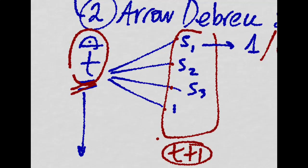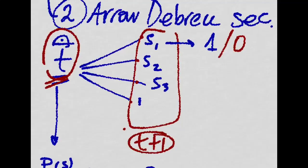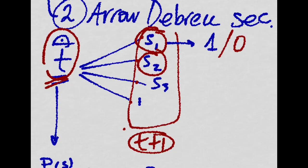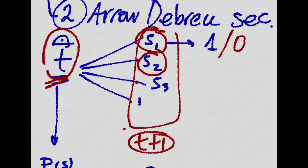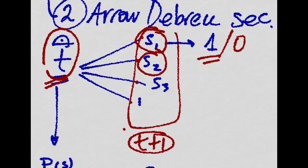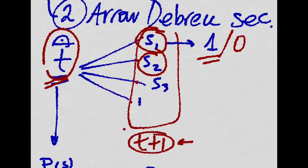What you do is you buy an Arrow-Debreu security for each of these states. So there exists an Arrow-Debreu security which pays you one dollar, or well, one unit of output at T plus 1 if the state of the world occurs.